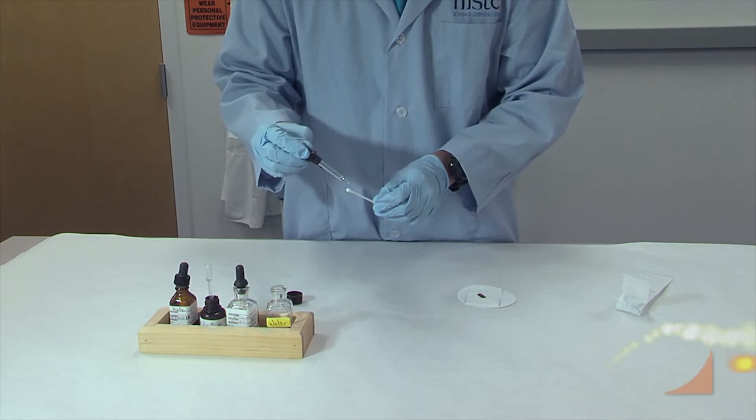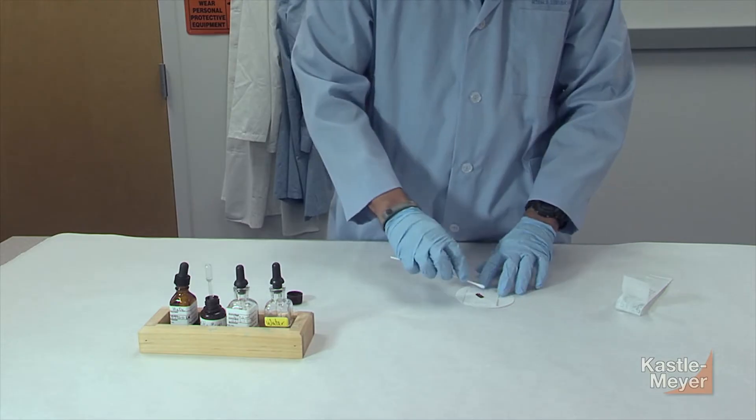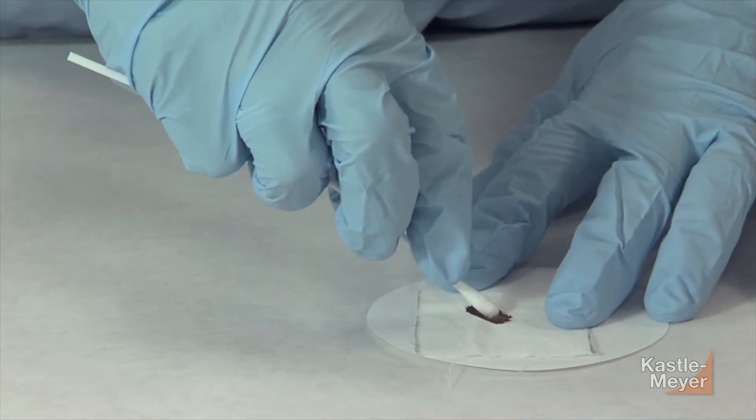First, take a sample of the blood stain to be tested by using a cotton swab or the corner of a piece of filter paper. Only a very small sample of the stain is needed for testing.